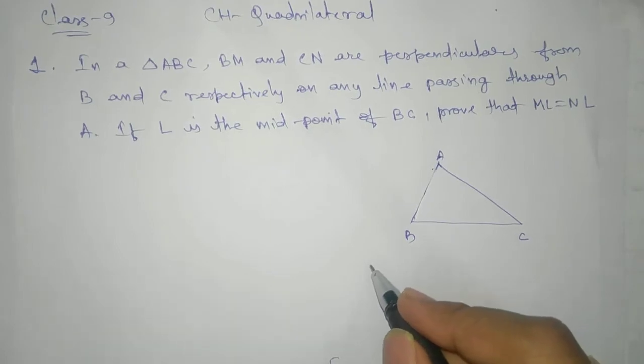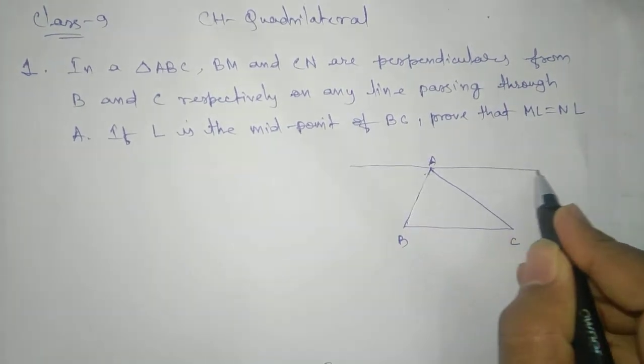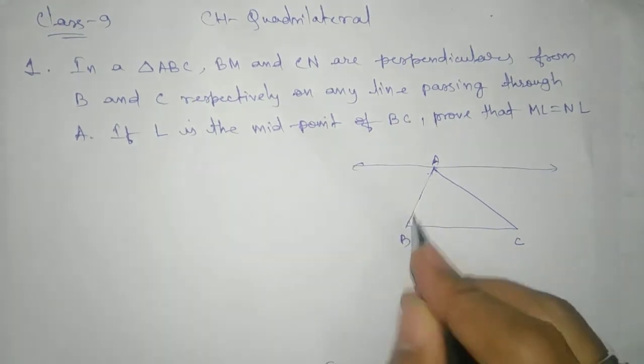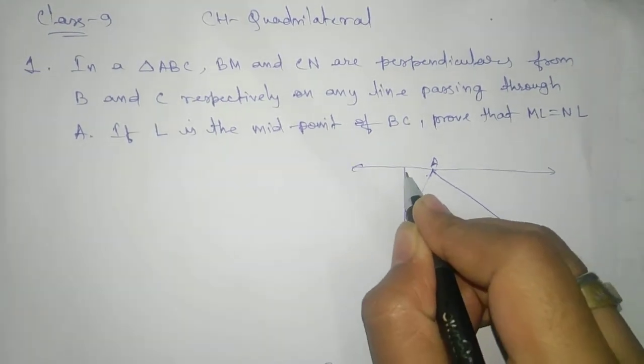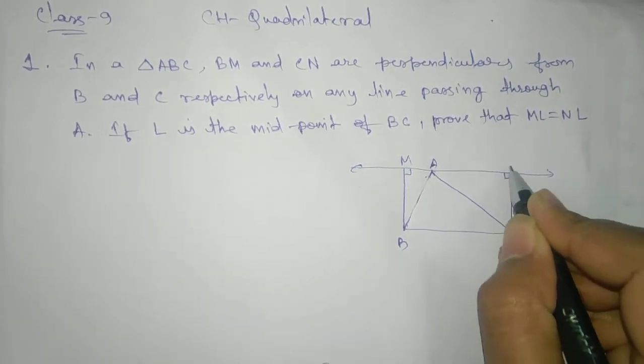Triangle ABC. Now they are saying that BM and CN are perpendiculars from B and C respectively on any line passing through A. So take a line which passes through A, and take here BM and CN perpendicular.